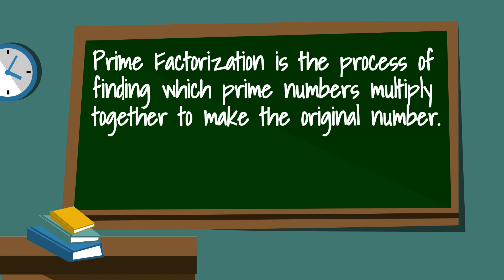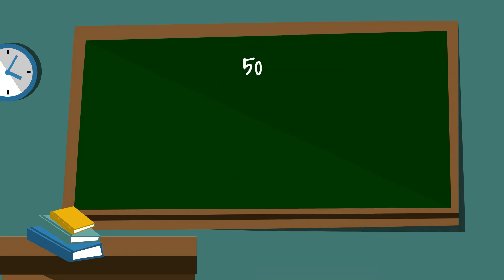So let's get started with the number 50. Let's begin with a factor tree. 2 times 25 equals 50.